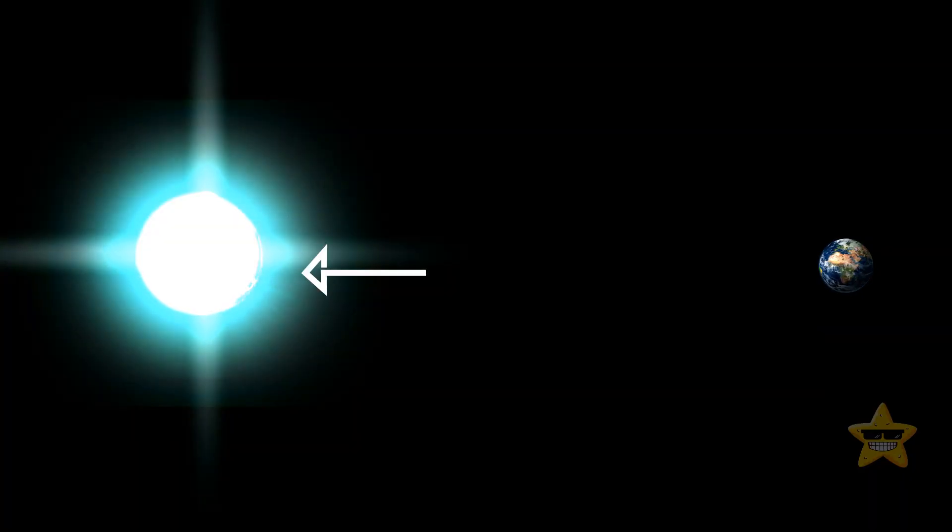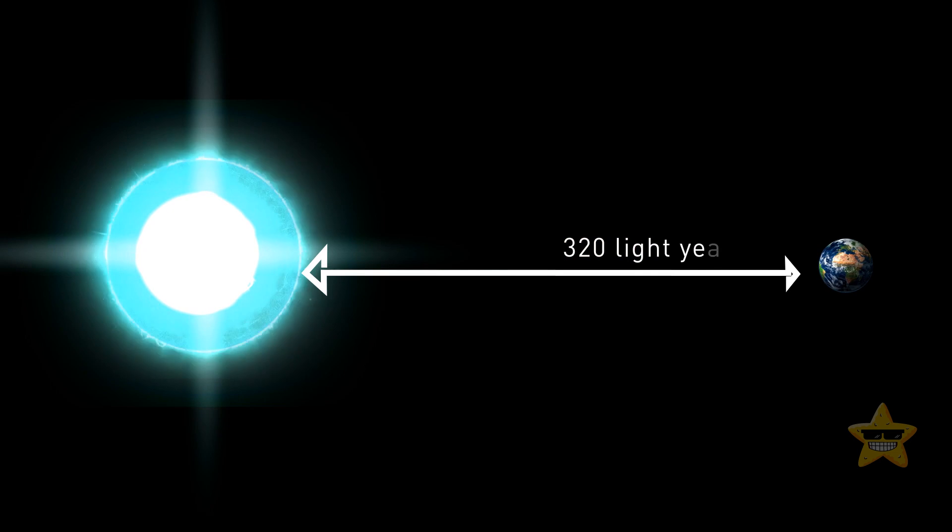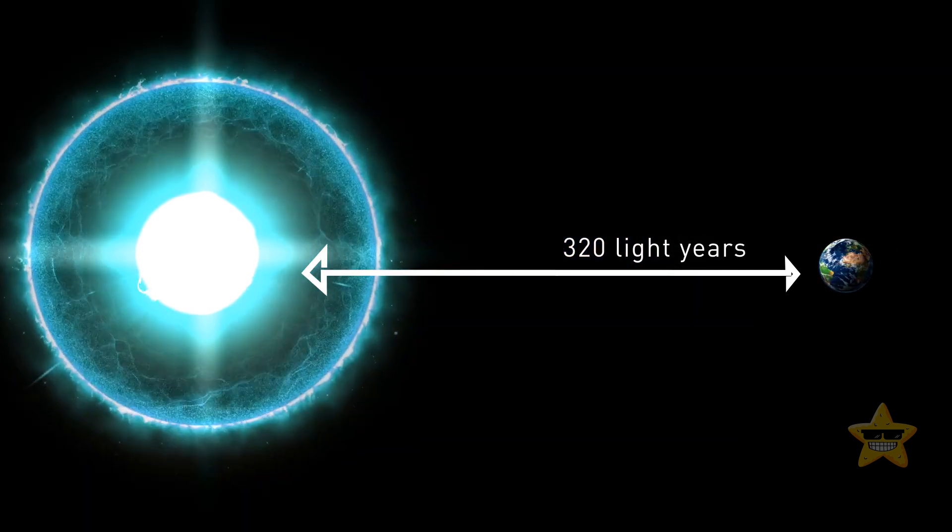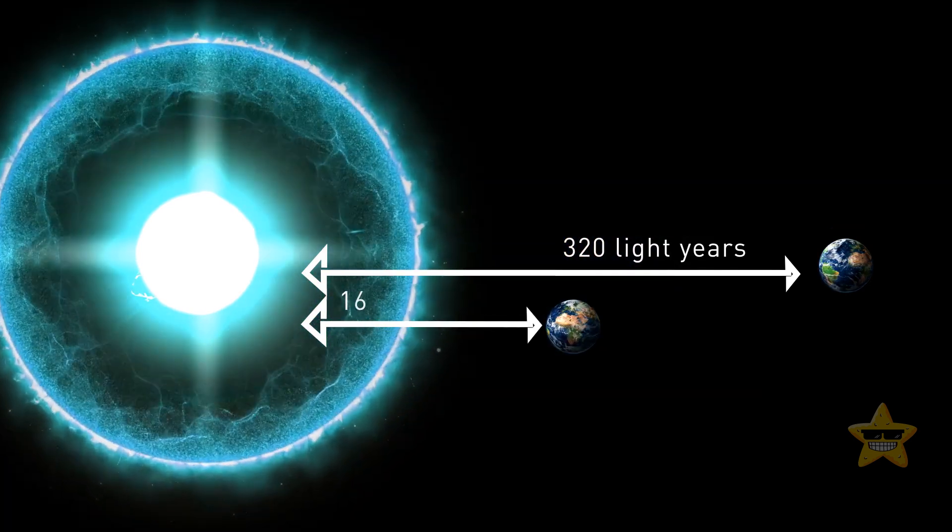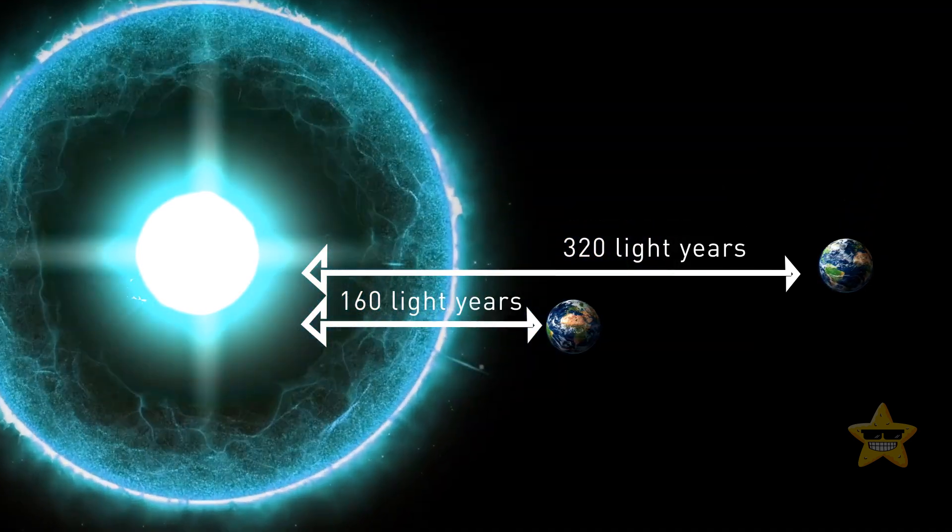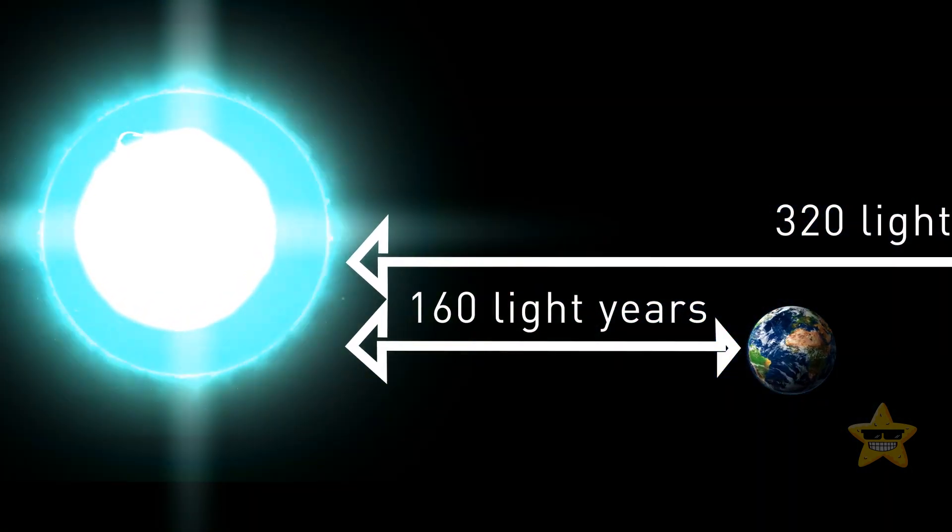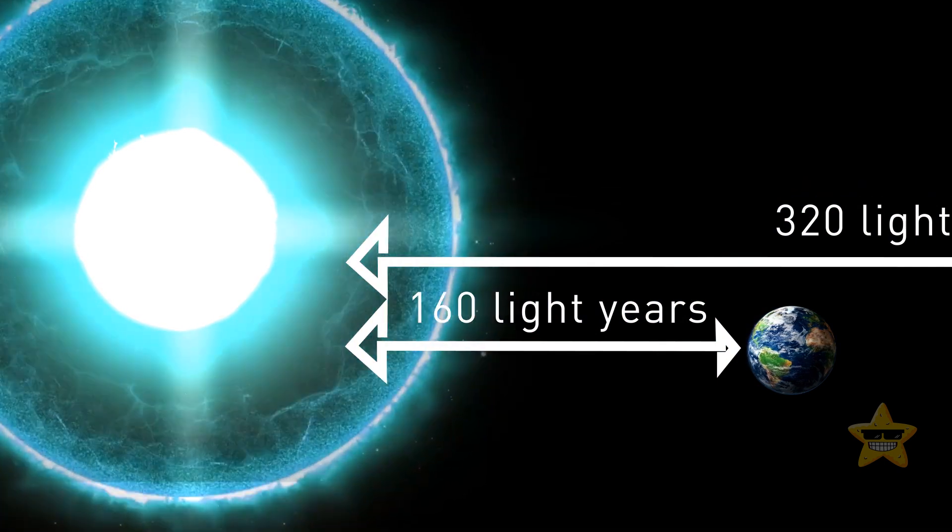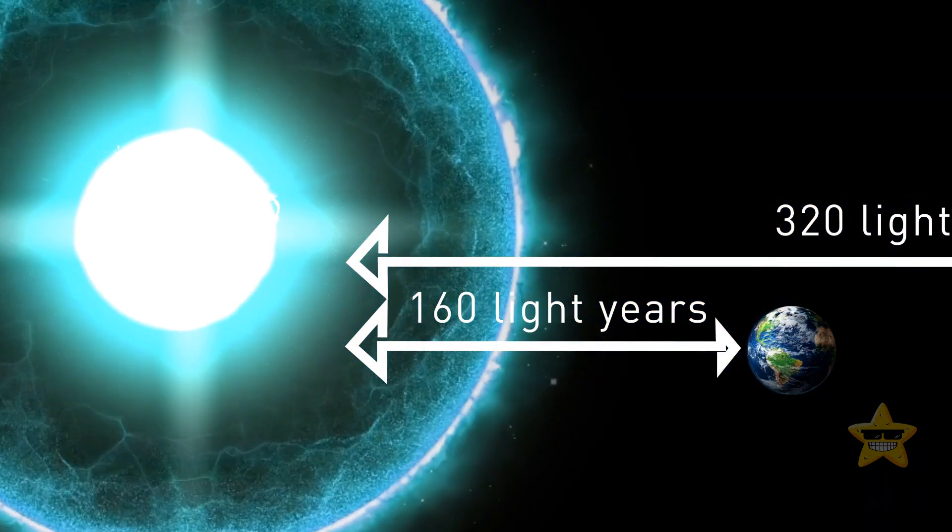Computer simulations show that a supernova 320 light-years from Earth wouldn't have any significant effects on our lives. But if a supernova was 160 light-years away, the enhanced stream of cosmic rays would hit Earth, and it would be 10 times more powerful than background levels. The effects would also last for centuries.